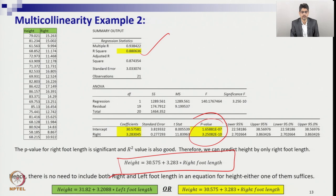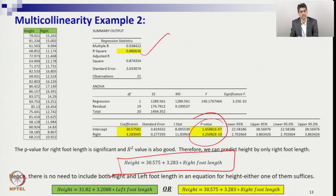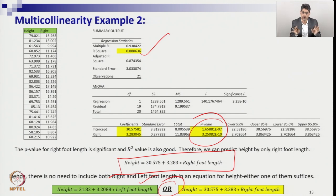Now the question is which foot to consider — left or right — in the final recommendation. Unlike the previous example where x1 was excluded because its p-values were not significant, here both independent variables show significant p-values. The strategy here is to consider either of them — both are equally good. Either you can consider left foot or right foot to measure height; both explain the dependent variable effectively.